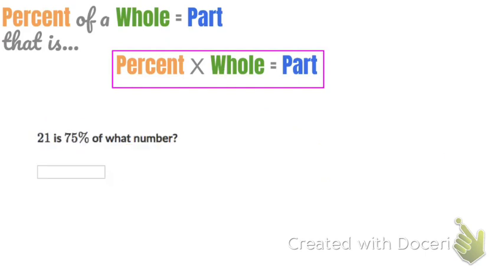Let's try one more. Here it says 21 is 75% of what number? Obviously, 75% is the percent. I see the word of here again. Remember, percent of the whole equals the part. So this is our whole. Since we don't know what it is, let's call it w. And 21 must be our part. Now that we know the percent, whole, and part, let's substitute it into the formula.